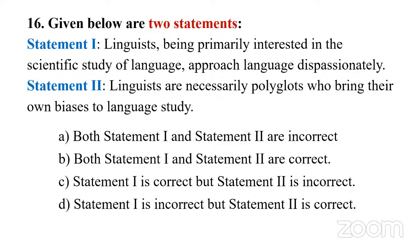To deal with this question, ask yourself whether the first statement is true — if it is, you can eliminate two options. Linguistics is the scientific study of language, approached dispassionately, meaning without bias, neutrally, objectively. The second statement contradicts the first: linguists are necessarily polyglots — people who know many languages — who bring their own biases to language study. There is a clear contradiction between the two statements.